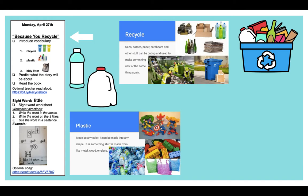Our next word is plastic. We can make lots of things out of plastic. Plastic can be any color. It can be made into any shape. You might see plastic at your house with your toys or maybe some water bottles or milk jugs at your house. Those are all made out of plastic.